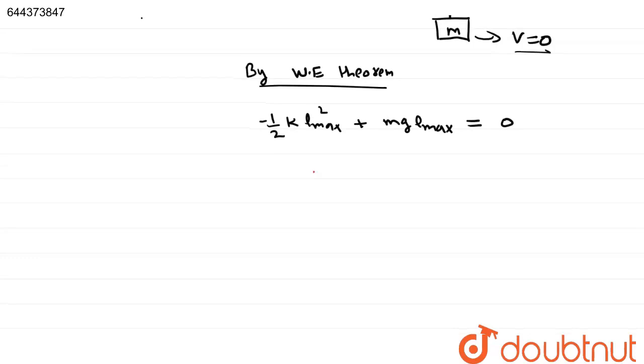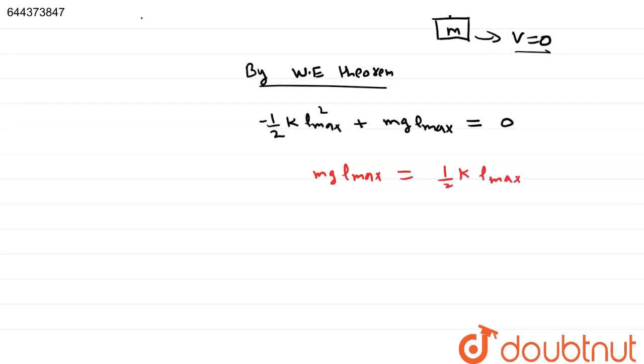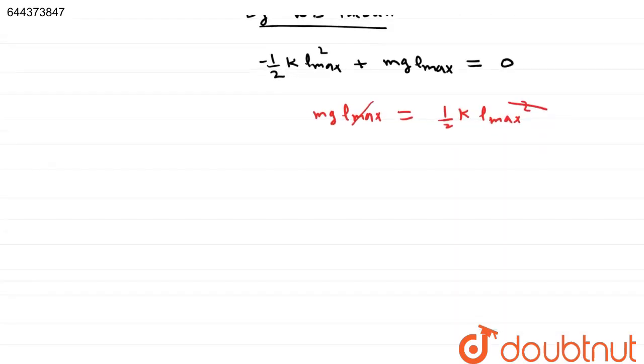So now, Mg Lmax is equal to half K Lmax square. Lmax gets cancelled, so we get Lmax is equal to 2Mg upon K.